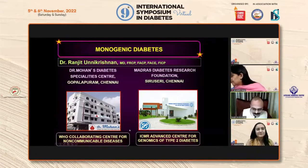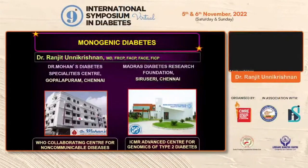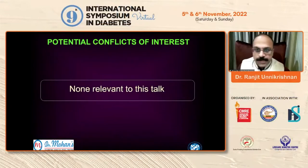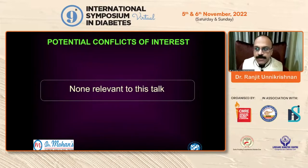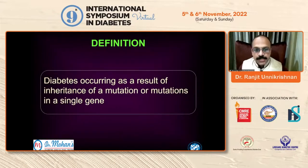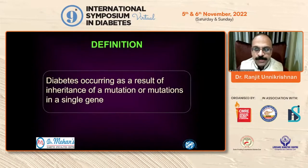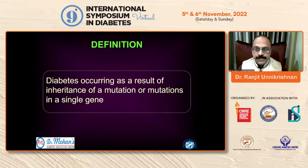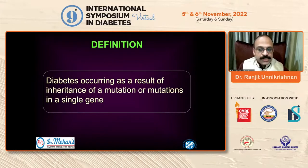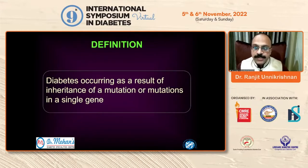I've been asked to speak on monogenic diabetes, and I have no conflicts of interest relevant to this topic. I'll begin by talking about what is meant by monogenic diabetes — it's diabetes caused by inheritance of a mutation in a single gene. Type 1, type 2, and even secondary diabetes are genetic in origin, but they're polygenic. Carrying a mutation is not sufficient to develop diabetes; many who carry mutations don't have diabetes, and many with diabetes don't carry the mutation.